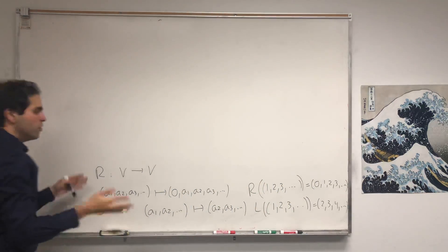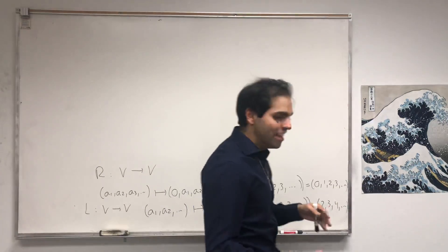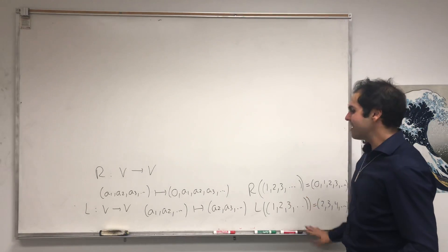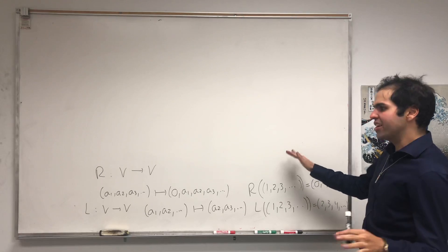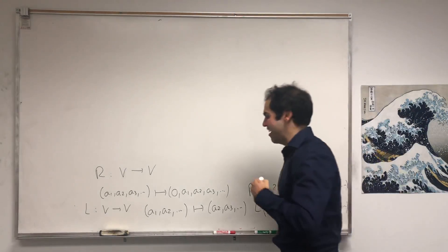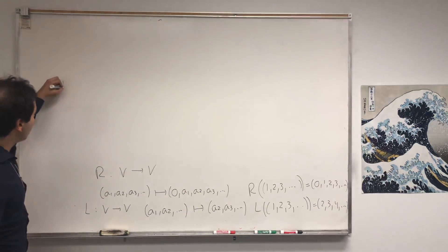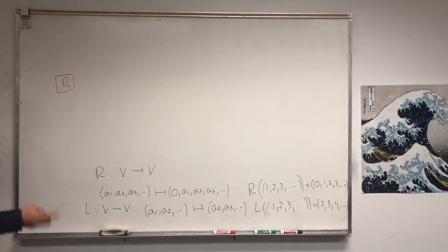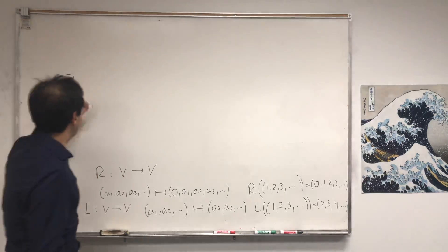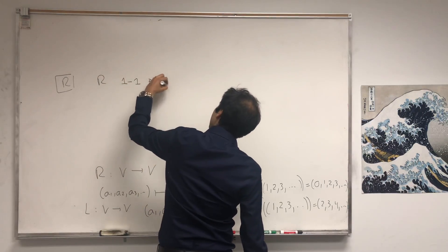You can show — it's a somewhat tedious exercise — that R and L are linear transformations, so you can study them with linear algebra. Now let me study one-to-one-ness and onto-ness of R and L. First, let's study R. I'm claiming that R is one-to-one, but R is not onto.